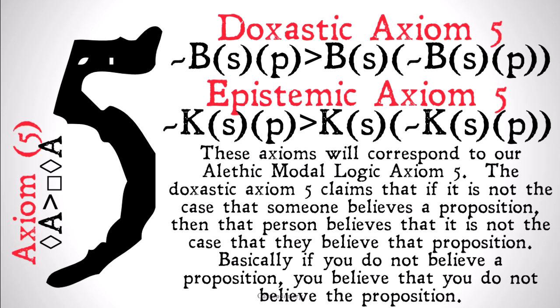These axioms correspond to our alethic modal logic axiom five. The doxastic axiom five claims that if it is not the case that someone believes a proposition, then that person believes that it's not the case that they believe that proposition. Basically, if you don't believe a proposition, you believe that you don't believe that proposition.